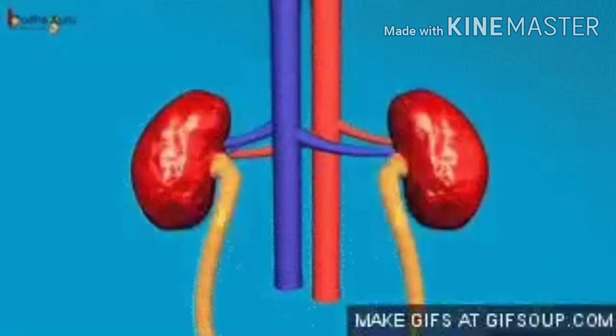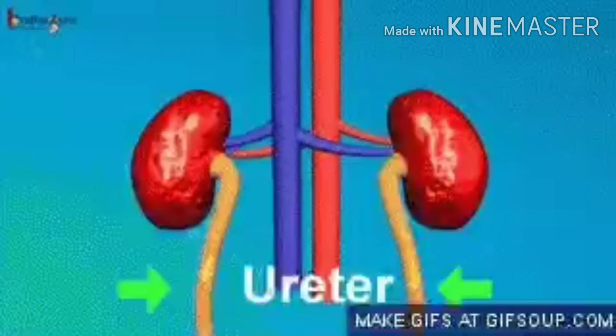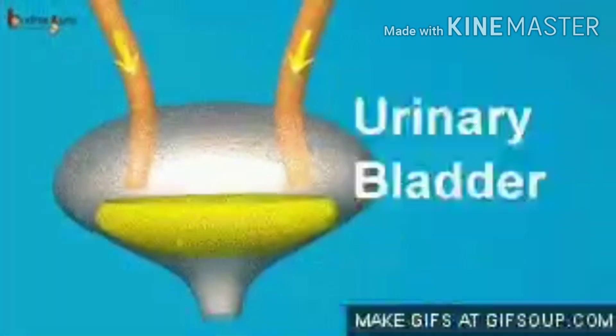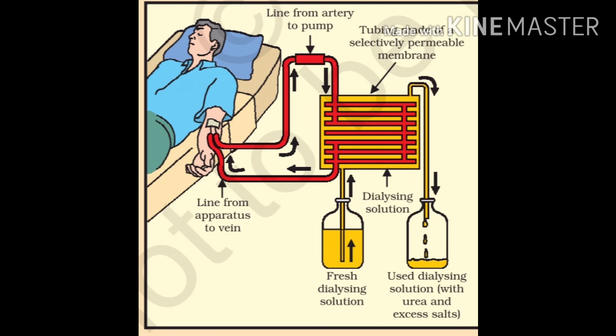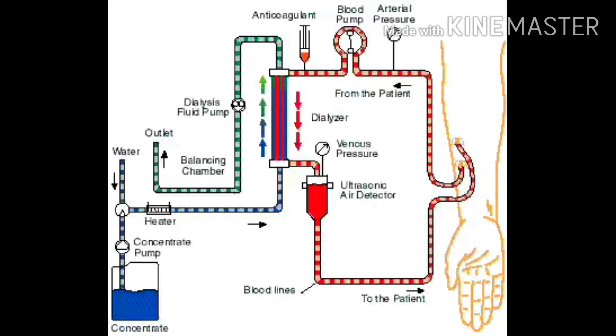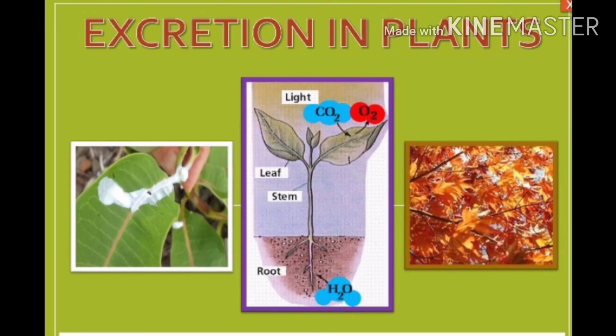As kidneys are vital organs for survival, several factors like infection, injury or restricted blood flow to kidneys can reduce their activity, leading to accumulation of waste in the body. In case of kidney failure, an artificial kidney can be used — a device to remove nitrogenous waste products from the blood through dialysis. In dialysis, the patient's blood is passed through a dialysis machine for removal of metabolic waste, and the purified blood is then pumped back into the patient.